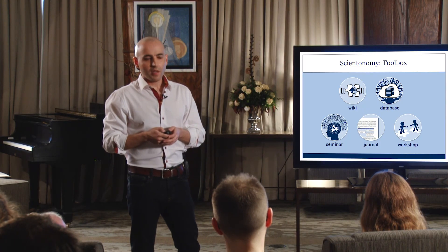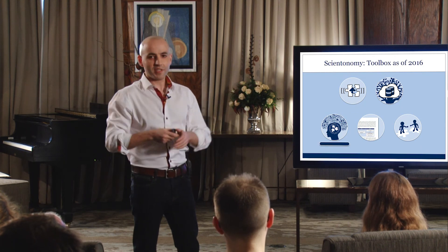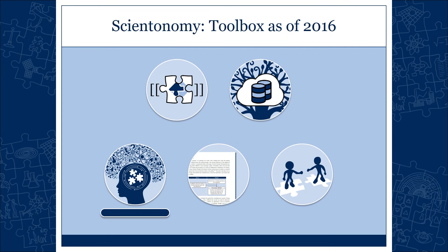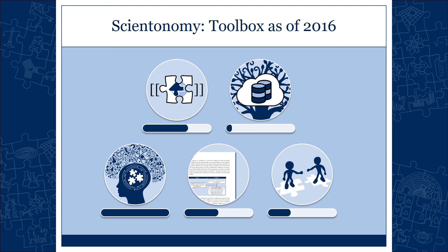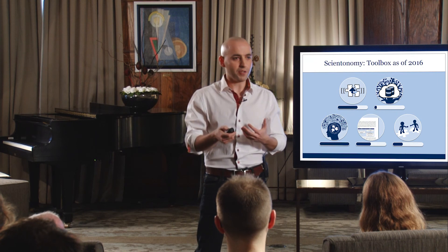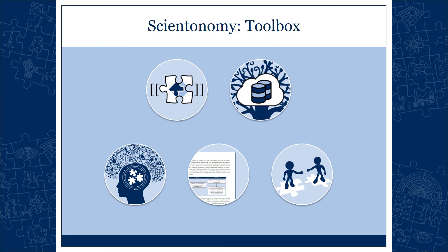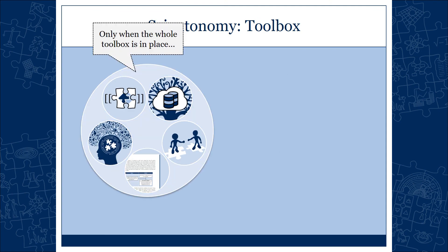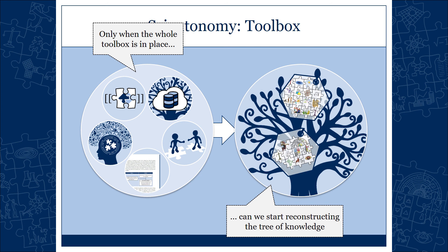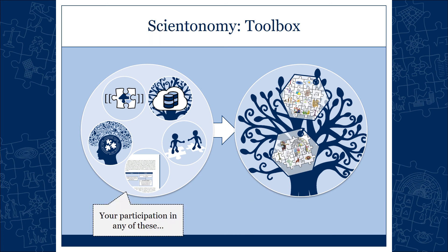Where do we currently stand? Of the five tools, only the seminar currently exists. The wiki is in the making — if we work hard, towards the end of this academic year we will have something to show the public. A journal is also in the making. The workshop will probably happen for the first time next year. As for the database, we don't have anything yet — but that's the last thing you can do. You have to clarify your theoretical foundations first before you can delve into reconstructing the tree of knowledge. Only when the whole toolbox is in place can we start reconstructing the tree of knowledge.